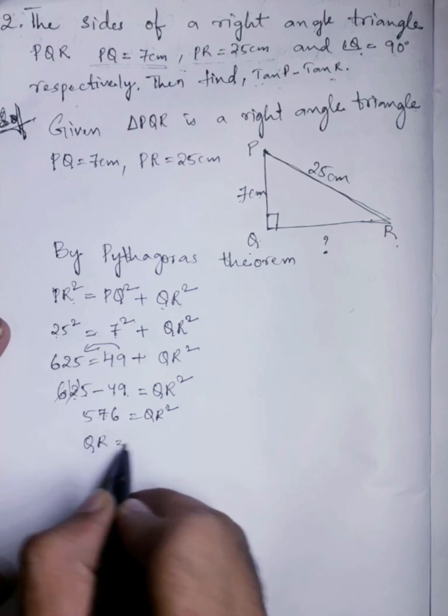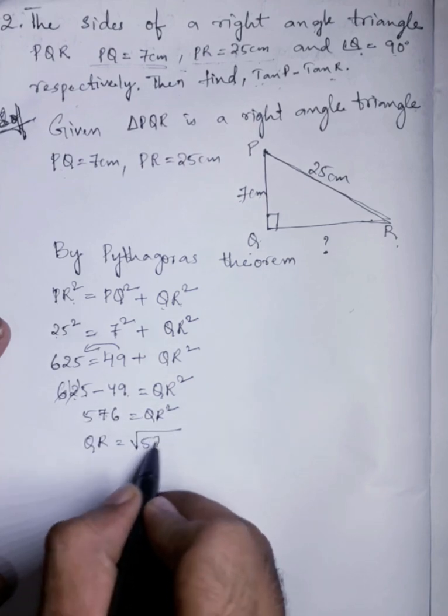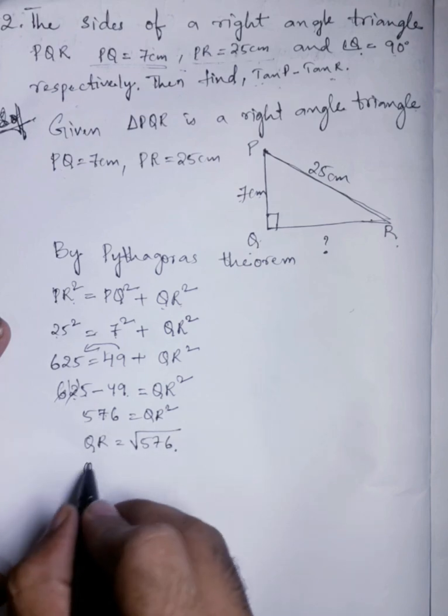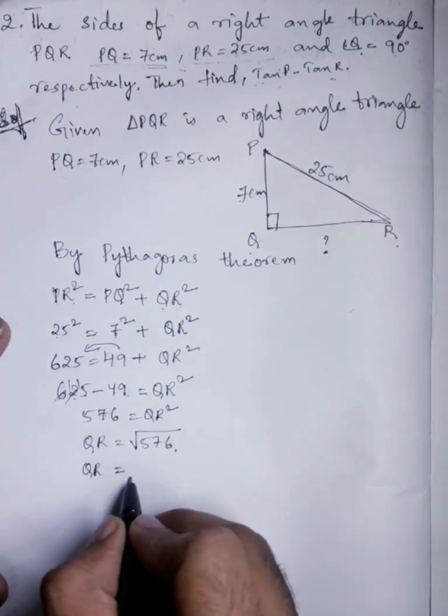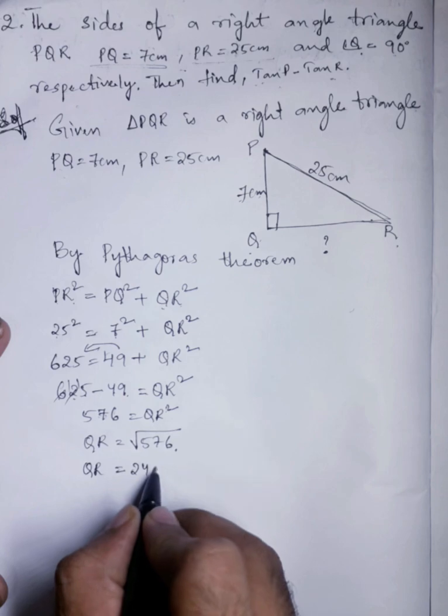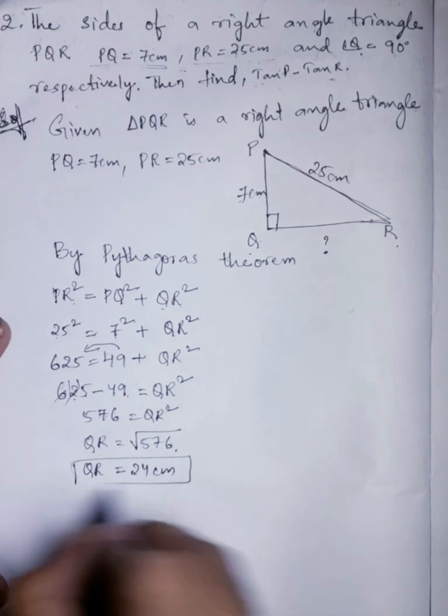QR equals, when we remove this square we get square root. Square root of 576 is 24, 24 cm. QR is 24 cm.